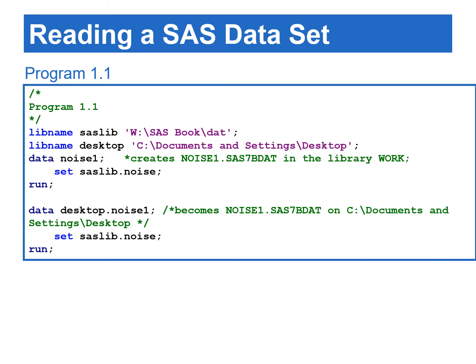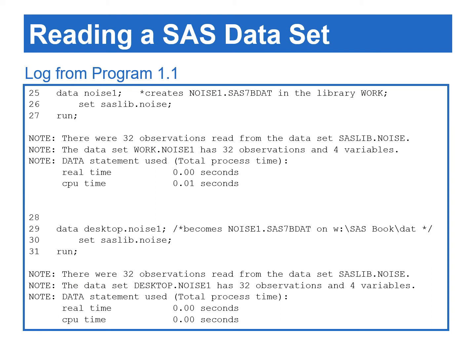This program also utilizes two types of comment statements. The comment statements in green color provide further explanation of the program. Once a program is submitted, the first thing that you should check is the SAS log generated from the submitted SAS code. The SAS log often contains information about submitted programs, including warning or error messages. For example, the SAS log from program 1.1 contains the message about the number of observations being read from the noise data set, the number of observations and variables in the output data sets, and data step computing times.